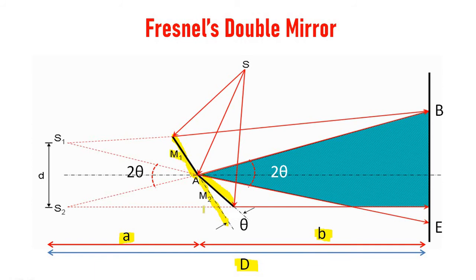M1 and M2 are inclined at a small angle represented by theta. We can see a cone here at point A. The angle B, A, E is 2 theta. Similarly, the angle S1, A, S2 is also 2 theta.